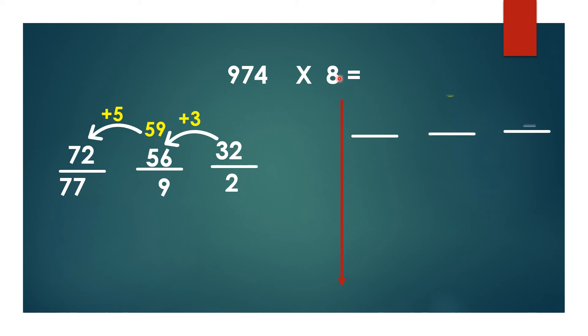Directly in one step, divide the answer into three parts. 4 × 8 = 32, 2 here and 3 write above as carryover. 7 × 8 = 56, 56 plus 3 = 59. 5 above and 9 here.